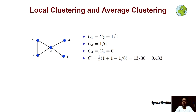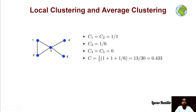The same happens for node 2. There is only one connection between the neighbors of node 2. Applying the same formula, one half of 2 multiplied by 2 minus 1 also gives us 1. So the local clustering of node 2 is also 1.